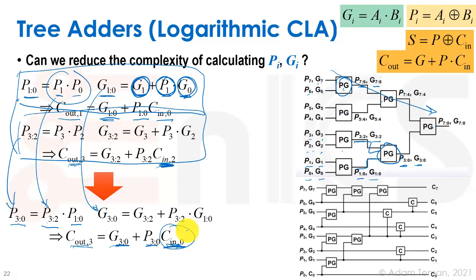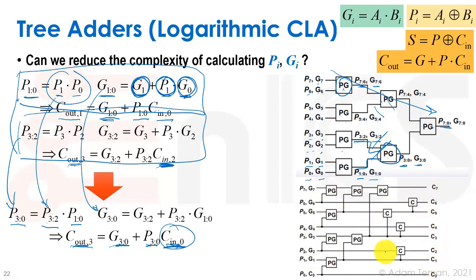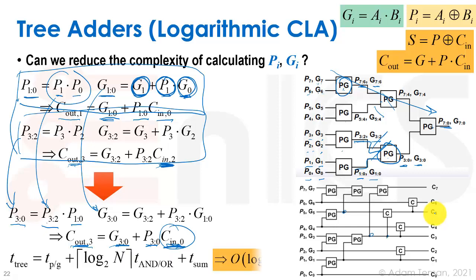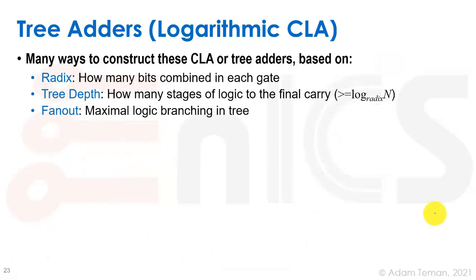That gets us the carry-out of the final stage, but to compute intermediate sums we need the carry-out of each median stage — carry-out of 1, carry-out of 2, etc. — so we can XOR with each stage's propagate to get the sum bits. We do this by tapping internal nodes of the tree at different levels, allowing us to extract all the intermediate carries for the 8-bit adder in very few stages overall — achieving O(log n).